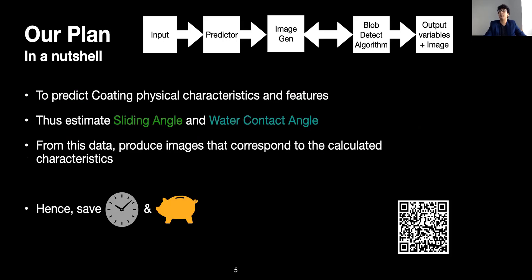Our plan is simple. We predict coating characteristics and features by estimating sliding angle and water contact angle. From this, we produce images that correspond to the certain sliding angle and water contact angle, hence saving on time. On the top, you can see an infographic explaining our process, which I will go on about later.